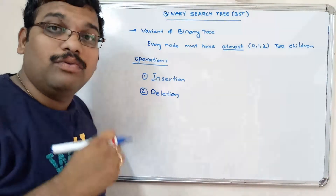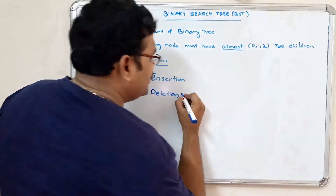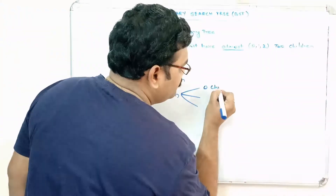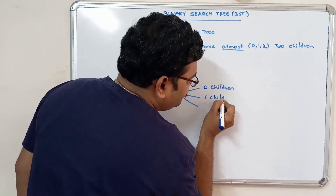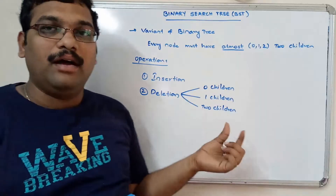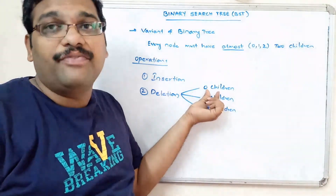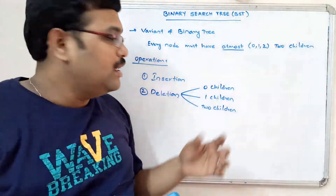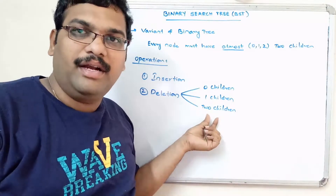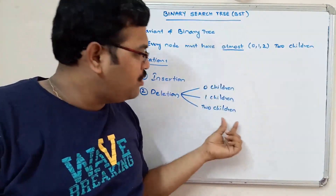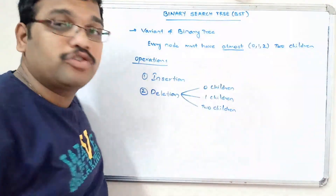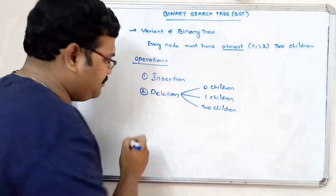For deletion, there are three cases to consider: deleting a node with zero children (a leaf node) — there is no problem in this case; deleting a node with one child; and deleting a node with two children. Since BST is a variant of binary tree, every node may have at most two children, so these three cases cover all deletion scenarios.